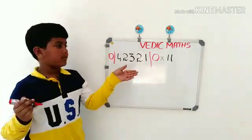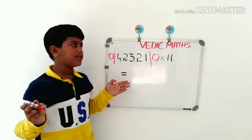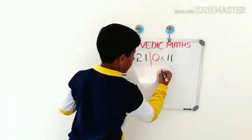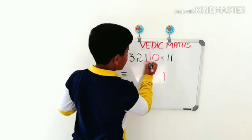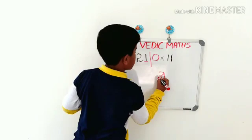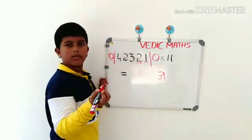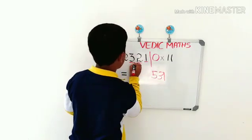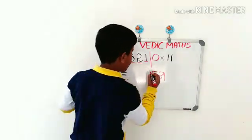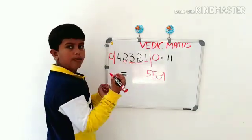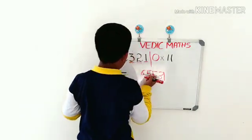Add each digit of the number to the digit on the right side: 1 plus 0 is 1, 2 plus 1 is 3, 3 plus 2 is 5, 2 plus 3 is 5, 4 plus 2 is 6, and at last 0 plus 4 is 4.